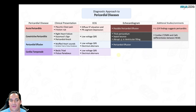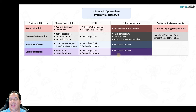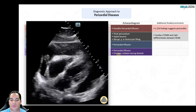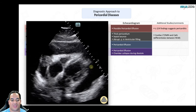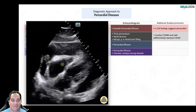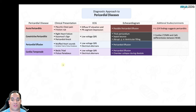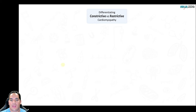For cardiac tamponade: you'll see a pericardial effusion, electrical alternans, and possibly low QRS voltages. But the key echocardiographic finding that makes the diagnosis is chamber collapse — specifically right atrial and right ventricular collapse during diastole.